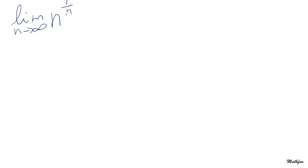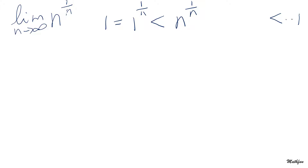Let's look at the first way. Obviously, 1 equals the nth root of 1, and this is definitely smaller than the nth root of n, so we get the first part. You probably guess what I'm trying to do — I'm trying to show that the limit is 1. We need to find something else whose limit is also 1, and then we can use the squeeze theorem to say this limit is 1.